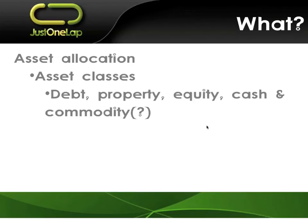Asset classes broadly would be debt - whether preference shares, company debt, state-owned enterprise debt or government debt - property, equity, cash, and then commodities. I'm going to touch on commodities now because I kind of leave them aside. There is a sense that we should have some commodity investment and I subscribe to that - I own some platinum. Commodities pay you nothing when you hold them and in fact cost you because there are storage fees.